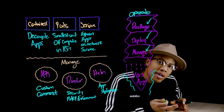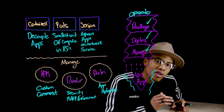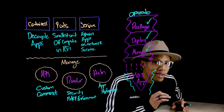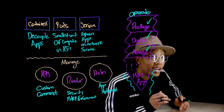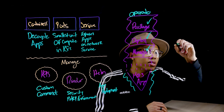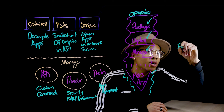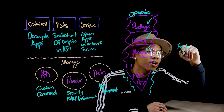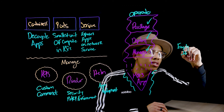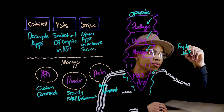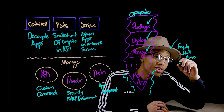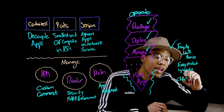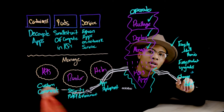Some of the automations that Lunar can take advantage of with this operator include things like being able to easily install Humio, handle product upgrades, and deal with configuration changes.